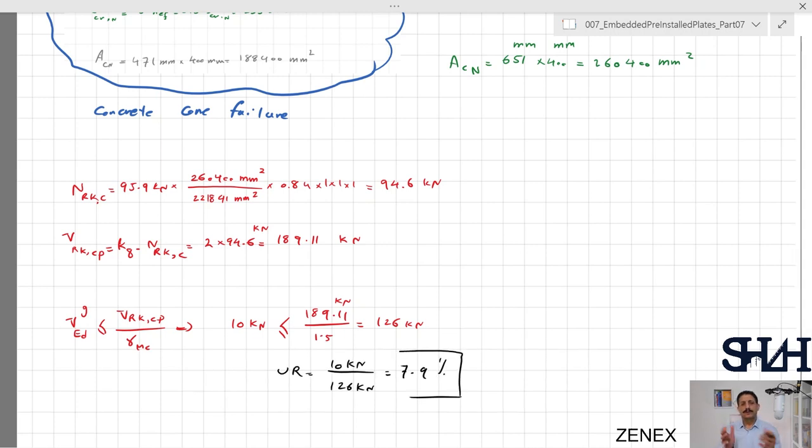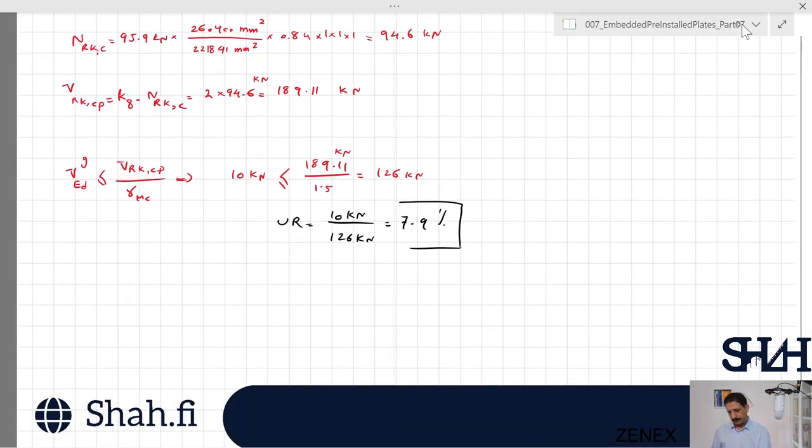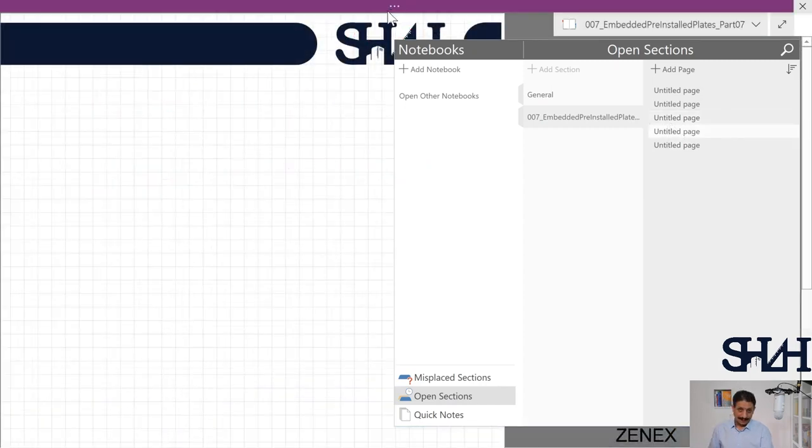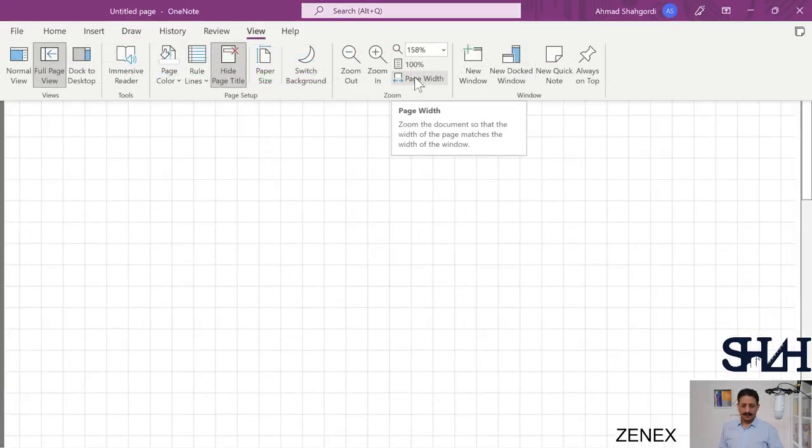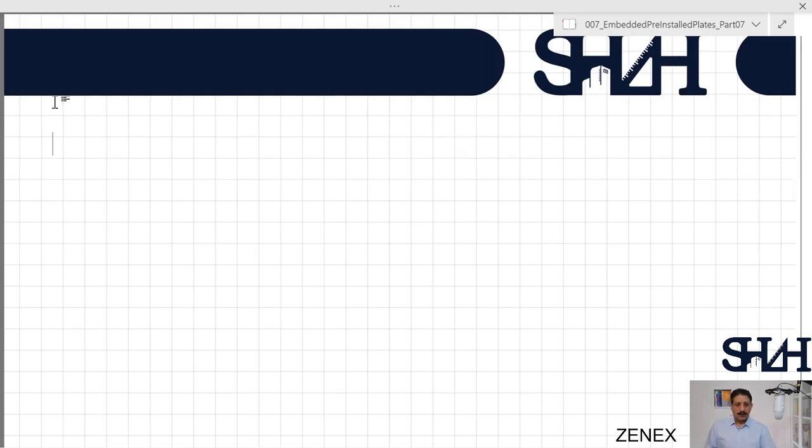At this point we checked tension in the fasteners and also in concrete, so they have been verified. Also shear for three modes: failure of fastener, concrete edge failure, and now concrete pry-out failure are already checked and verified. Now it's not finished yet, we need to verify the combination - they would fulfill the requirement according to the code EN 1992 part 4.